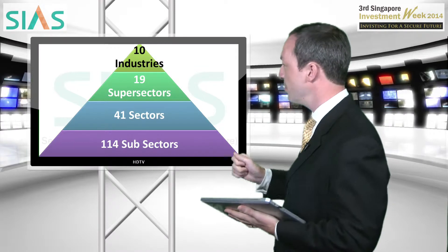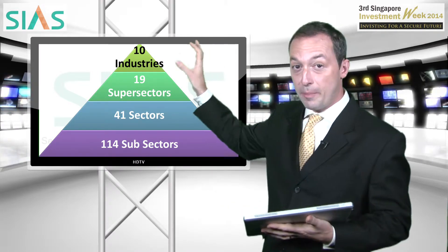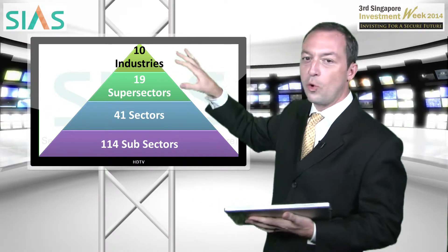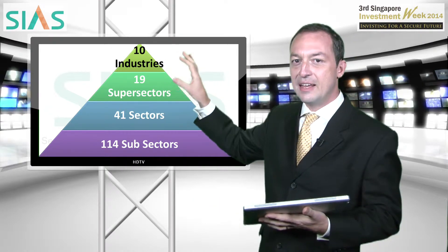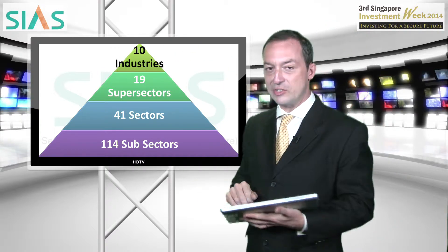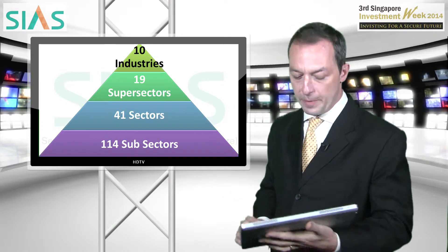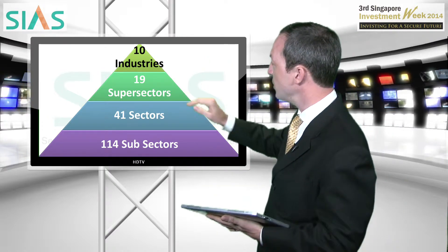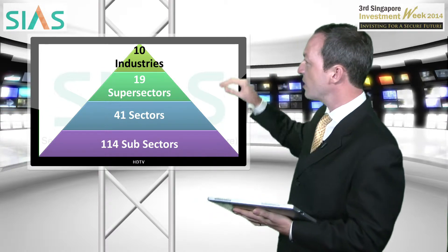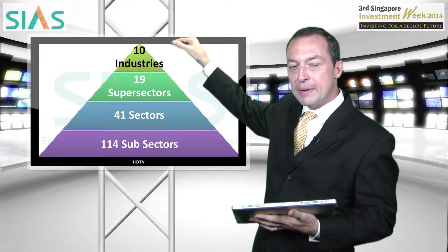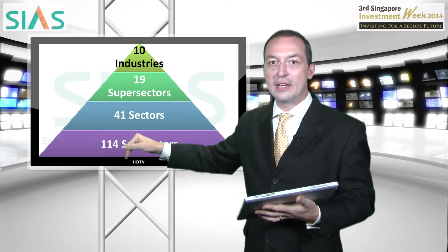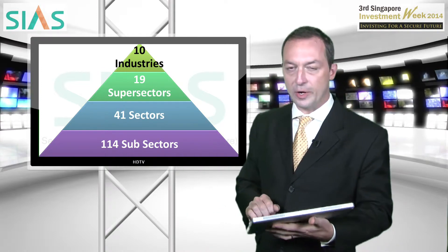Let me take you through this pyramid. Start at the top, and what we see there is 10 industries — that's the overall categorization. They are then further broken down into 19 supersectors, and they in turn are made up by 41 sectors and 114 subsectors. So you can really filter down into some very specific subsectors and sectors.